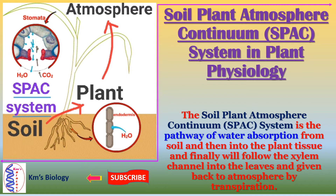Welcome friends. Today I discuss about an interesting event known as the SPAC system in plant physiology. The SPAC system is known as the soil-plant-atmosphere continuum system. Here is a diagram showing the soil-plant-atmosphere relationship. The SPAC system is the pathway of water absorption from soil, into plant tissue, then through the xylem channel into the leaves, and given back to the atmosphere by transpiration.